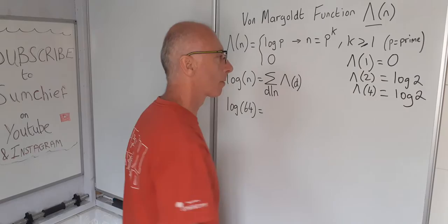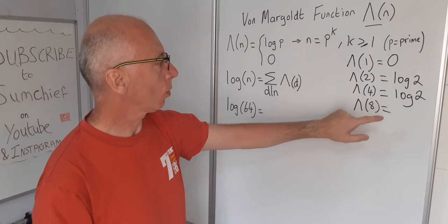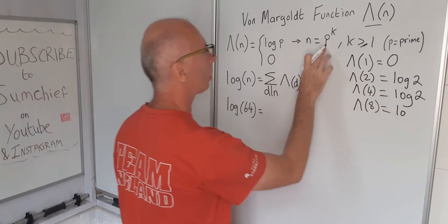Okay 64. The divisors of 64 follow a nice little pattern. So this is going to be quite easy to find. 8. Well if 4 is 2 squared, 8 is going to be 2 cubed. So therefore 2 to the power of 3, log of 2 in this case.